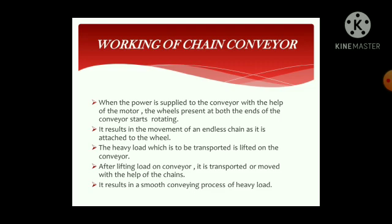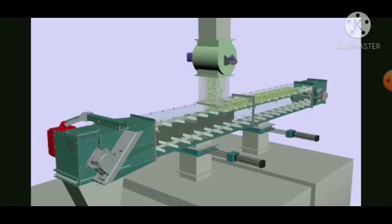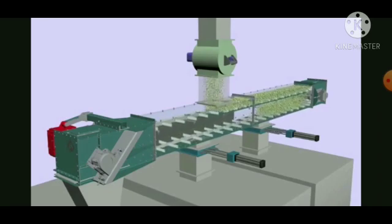For better understanding, I would also like to show the video of the working of the chain conveyor. This video is of the T-belt type of chain conveyor. In this video, we can see how the material is lifted on the chain and how the chain conveys this material towards its destination. We can also see the wheels present at both ends and how the chain is attached to both wheels.